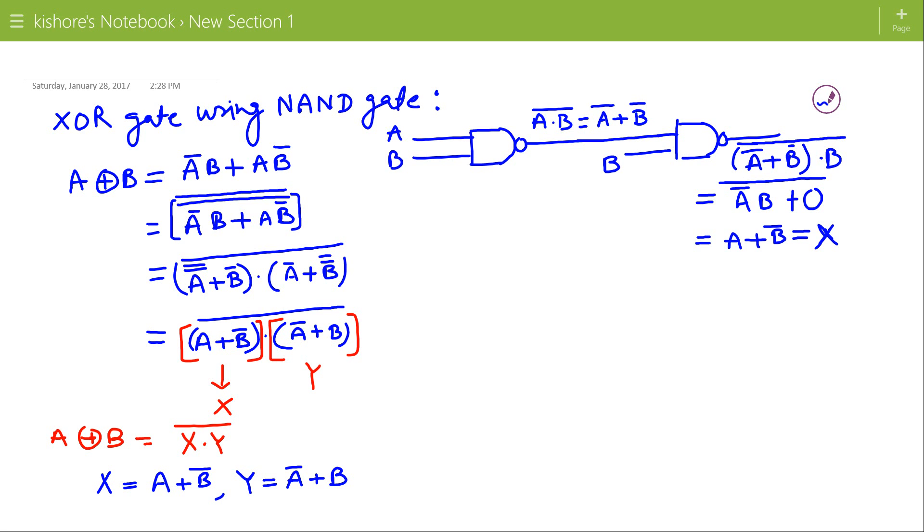Similarly, we will find Y using NAND gates. Inputs are A and B. Output of NAND gate is A NAND B that is A bar plus B bar.